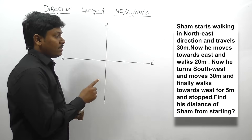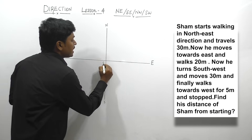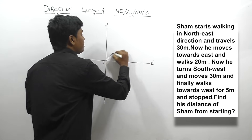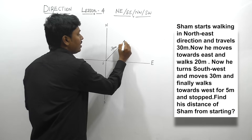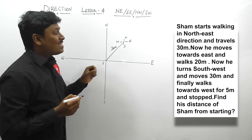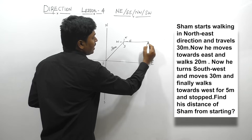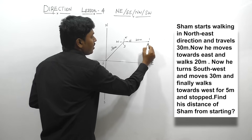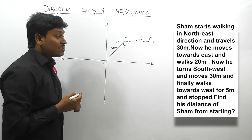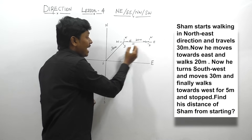Let me move on to the last question, question number 4. Sham started walking in north-east direction and travels 30 meters. He is walking 30 meters towards north-east and reached a point. Draw a small direction — north, south, west and east. Now he moved towards east and walked 20 meters. From this point, he is walking 20 meters towards east. After reaching this point, draw a small direction — north, south, west and east. Now he turns south-west and moves 30 meters. From this point, he is moving 30 meters towards south-west — both the lines should be equal.